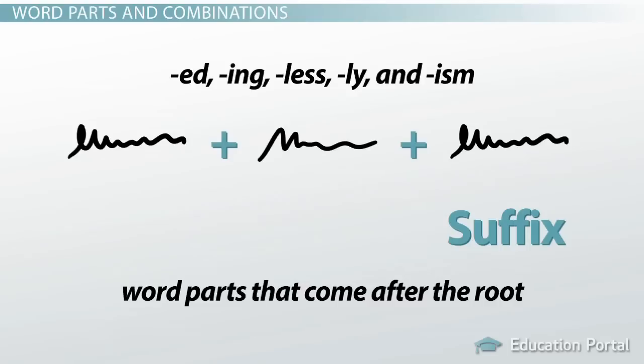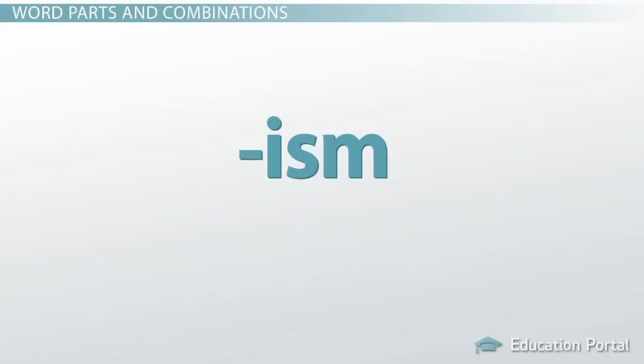When prefixes and suffixes show up in science words, they work the same way as they do in regular English. For example, the suffix ism appears in the word thigmotropism. You don't need to know that ism is a suffix that indicates a noun. You already know plenty of similar isms.